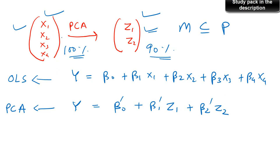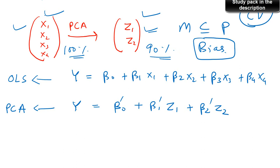So we would go ahead with two principal components instead of four original variables. Reducing the dimension is going to reduce the bias in your model, and your model is going to do better on test data instead of using the original set of variables. That is one of the main reasons to use principal component regression instead of ordinary least squares, especially when a large majority of variation is explained by a fewer set of principal components — though that doesn't always happen and depends on the data.